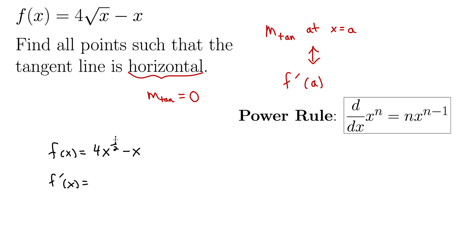f prime of x is, okay, 4, I'm bringing down the 1 half. 4 times 1 half is 2. x to the negative 1 half. And then minus 1, the derivative of x is always 1. Well, x to the 1. Bring down the 1, subtract 1, we get 1x to the 0, which is simply 1. Then, of course, the negative is just hanging on for the ride here.